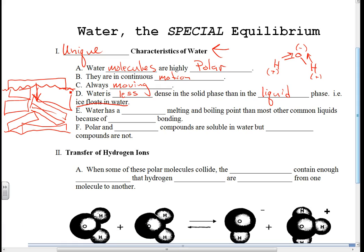All right, water has a high melting and boiling point. It is much higher, I should say, it has a higher melting and boiling point than most other common liquids because of hydrogen bonding. All right, let's go over here and draw a picture. I'll just come right over here again.